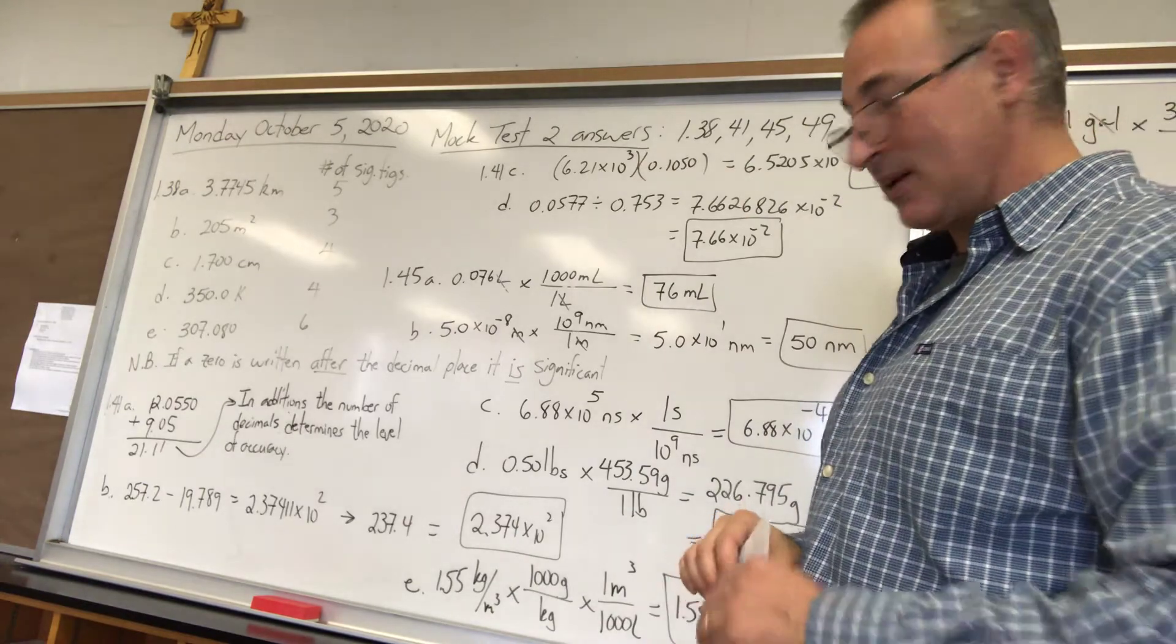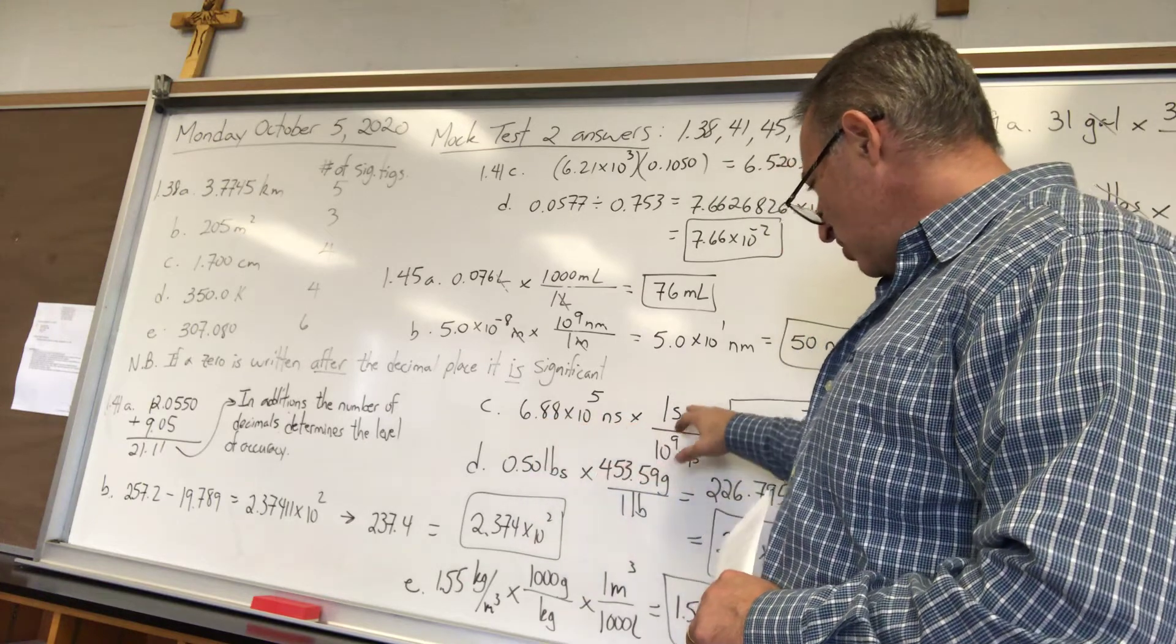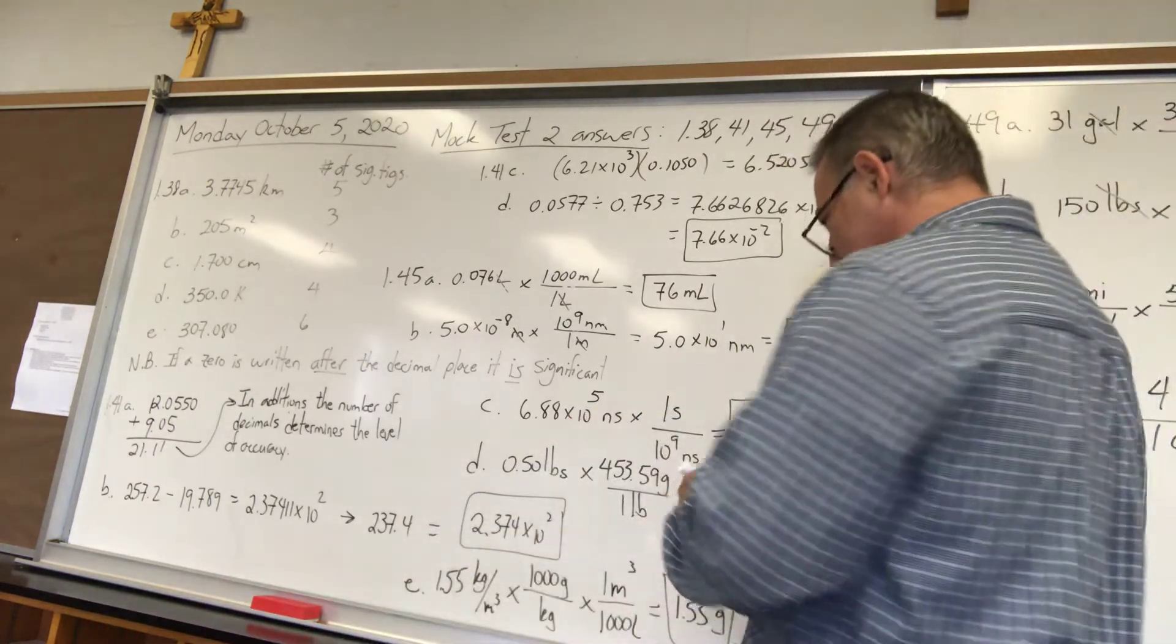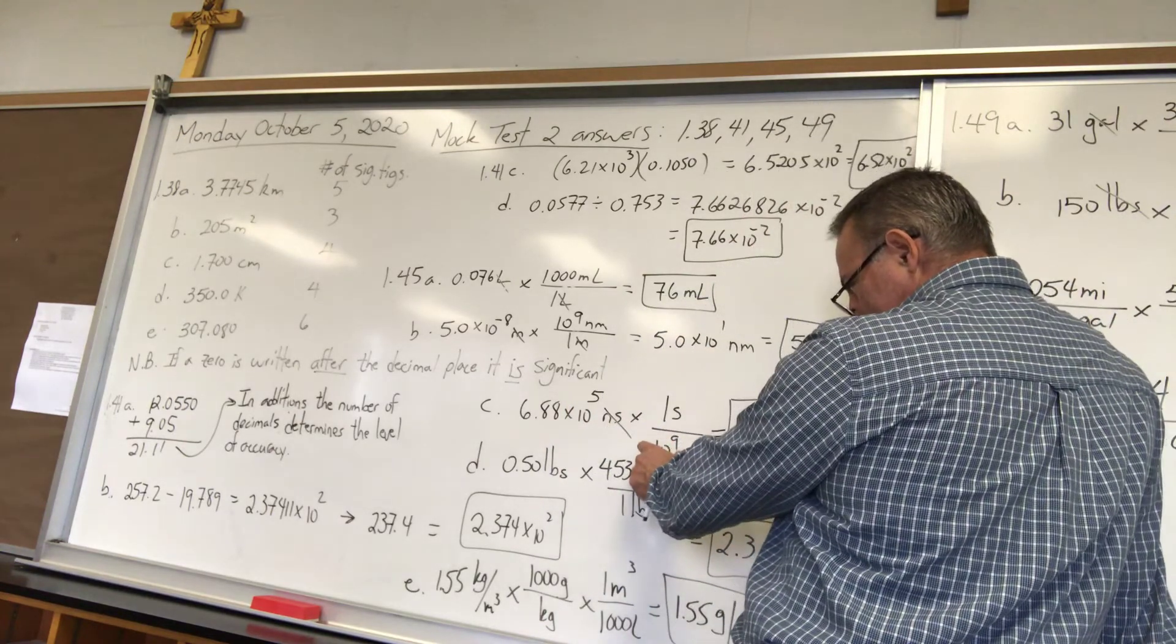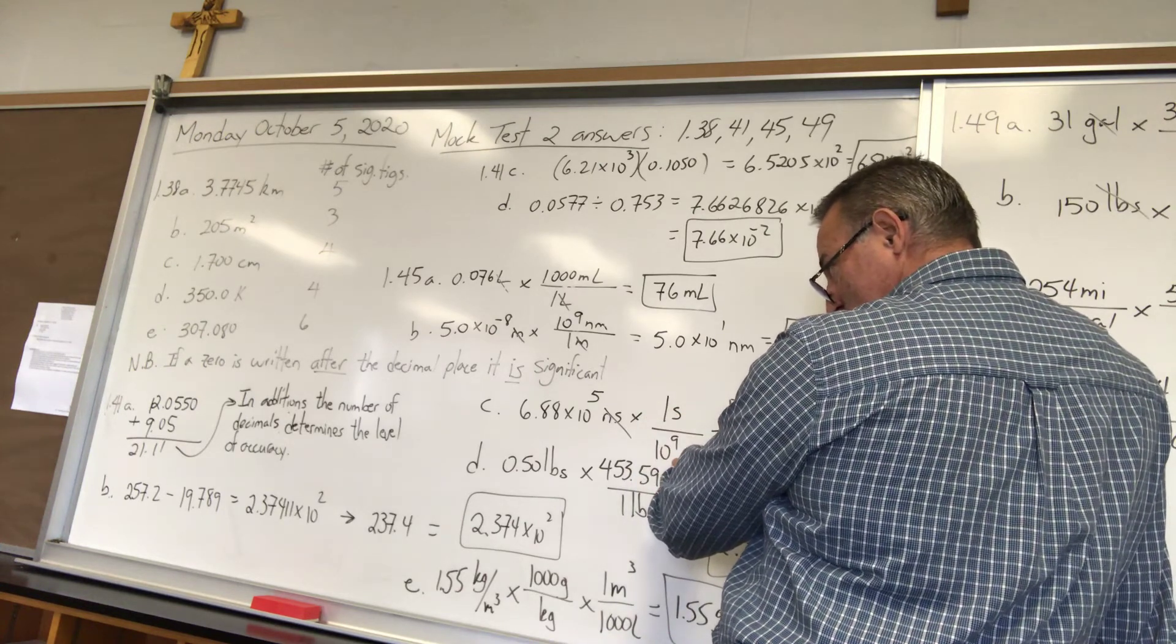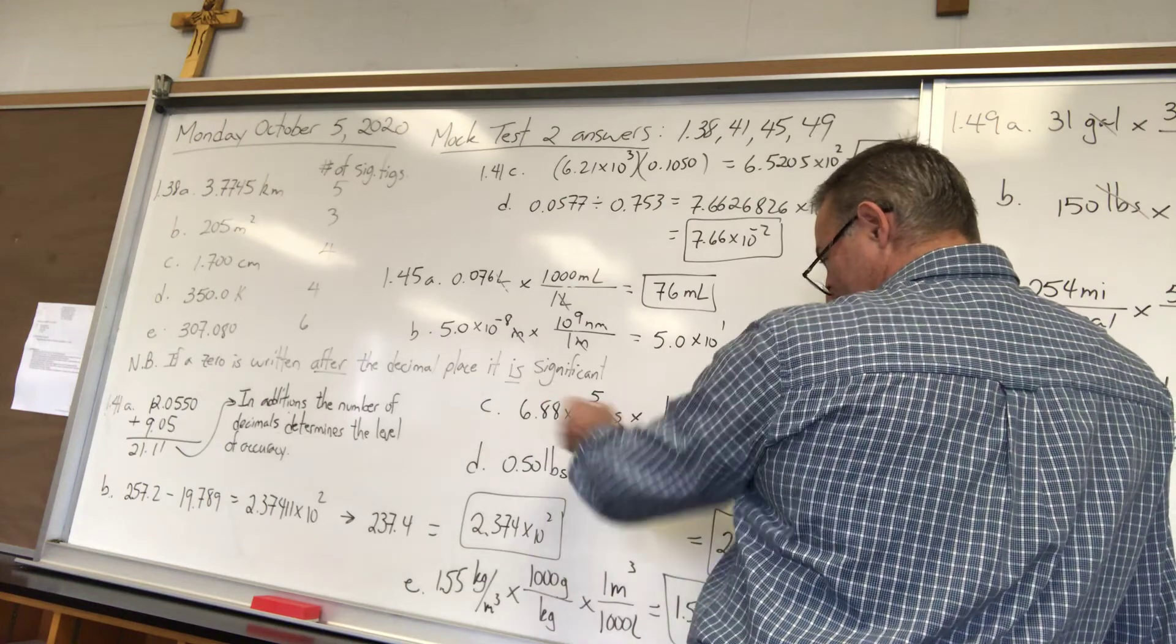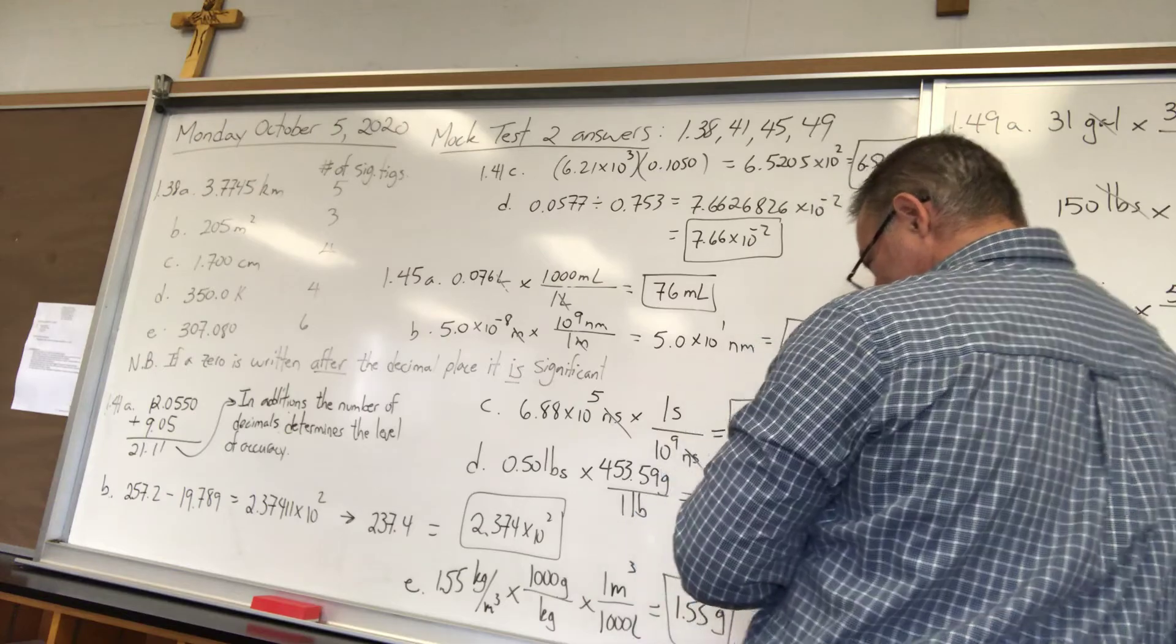Again, no calculator usage was necessary. C, 6.88 times 10 to the 5 nanoseconds. There are 10 to the 9 nanoseconds per second. This time I want to get rid of nanoseconds so I put nanoseconds in the denominator. That allows me to cancel nanoseconds. And then to do this in my head what I did is I brought this into the numerator turning it into 10 to the negative 9 following the rules of exponents which you know. 10 to the 5 times 10 to the negative 9 gives you 10 to the negative 4. And then I write the rest of it because 10 to the negative 4 times 6.88 that part remains unchanged. And then the unit is second because the seconds hasn't canceled. That's the thing that's left over.